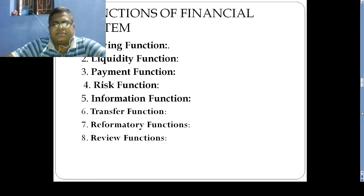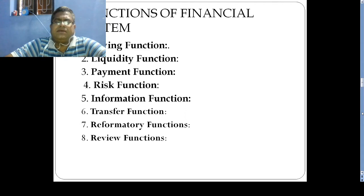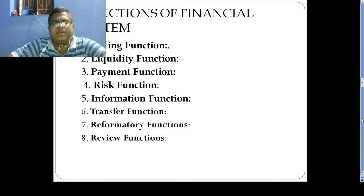The functions of the financial system include: the saving function, where savings are transformed into investment; the liquidity function, where assets are converted into cash quickly; the payment function for repayment of loans; the risk function, dealing with uncertainty; and the information function, where bids and share information are published in websites and news reports. Additionally, there are transfer functions and reformatory and review functions.